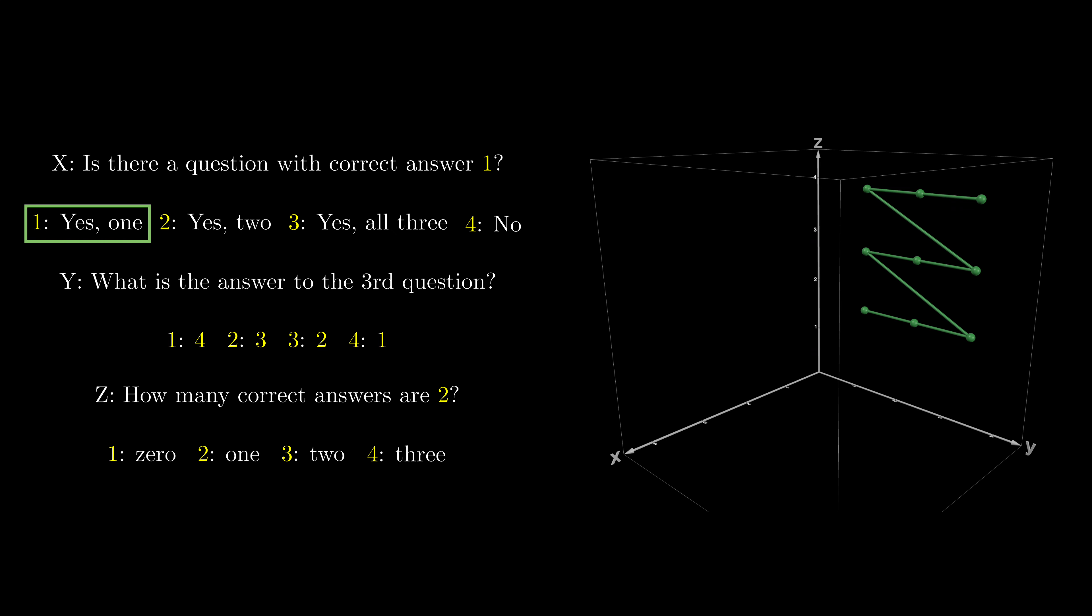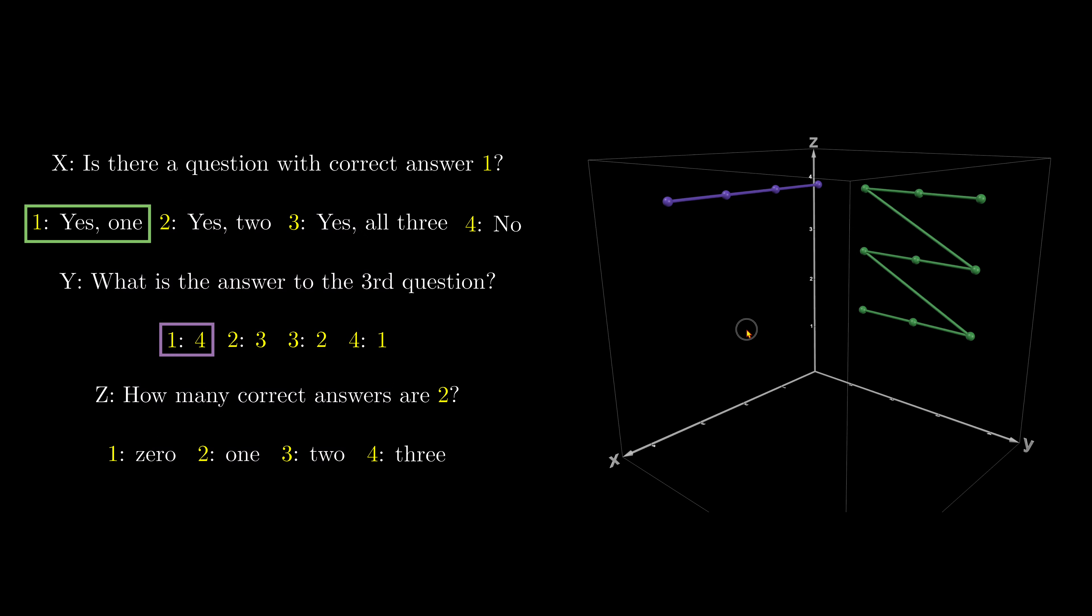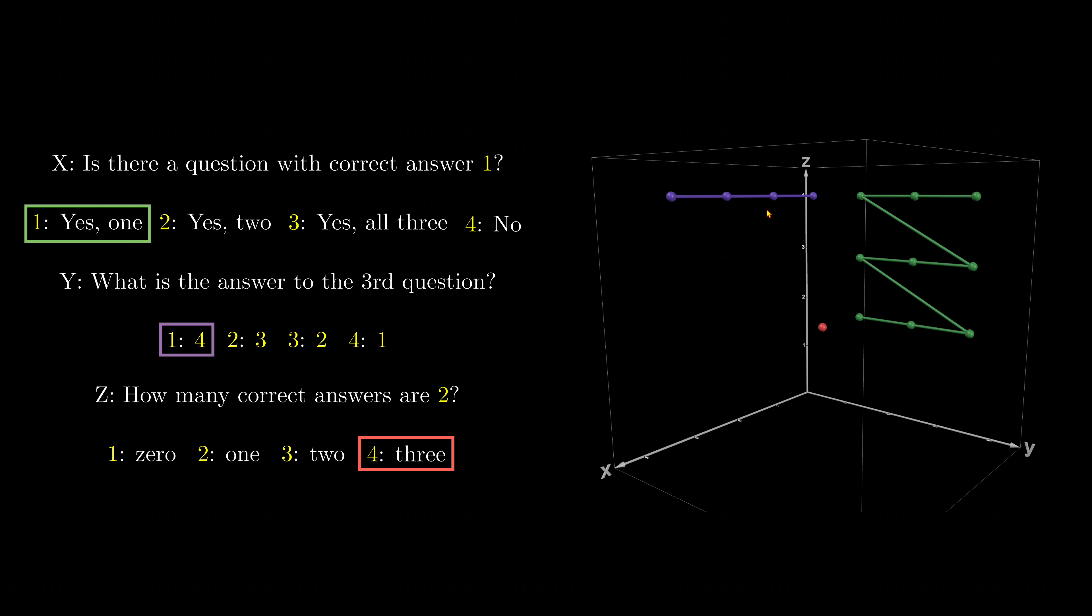The purple points represent the feasible combinations restricted by option one of question two. The feasible combinations can also be a single point. For example, option three of question three represents a single point, which is the point two, two, two. Even without considering the self-contradiction in question three, we can see that these three feasible combinations have no overlap, which means this solution is not self-consistent.